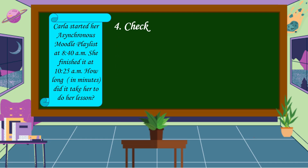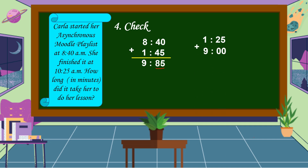We have already an answer to our problem. The last step is we're going to check or look back to know if our answer is correct. 8:40 a.m. is the time that she started her lesson, and it took 1 hour and 45 minutes to finish it. So, we're going to add: 40 plus 45 is equal to 85, and 8 plus 1 is equal to 9. So, it becomes 9 hours and 85 minutes. 85 minutes is more than an hour, so we're going to regroup one hour. The remaining minutes is 25, and we add 9, so 1 and 25 plus 9 is equal to 10:25. This is 10:25 a.m., which is the time that she finished her lesson. So, 1 hour and 45 minutes is correct.